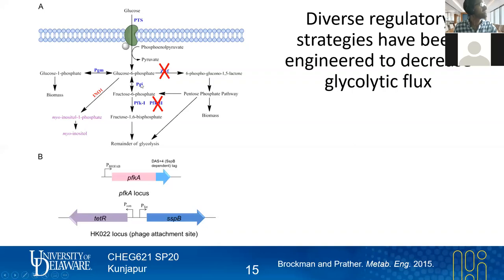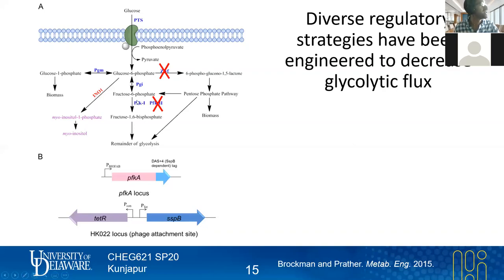The choice of which glycolytic enzyme to target matters. PGI, just downstream of G6P, seems like a rational first choice, but it catalyzes a reversible reaction — not ideal for strong flux control. PFK (phosphofructokinase) catalyzes an irreversible reaction, and with one isoform already knocked out, having your control point at this irreversible step affords much greater control over pathway flux.